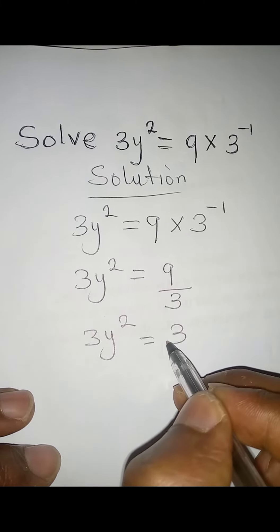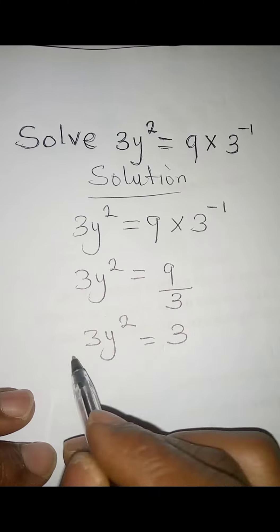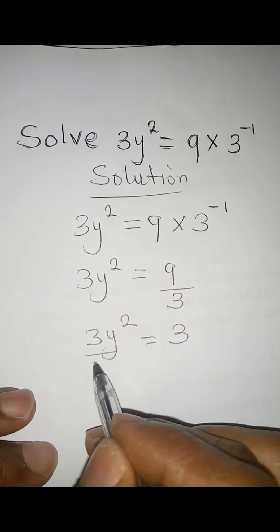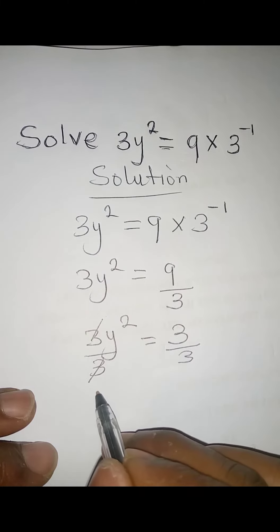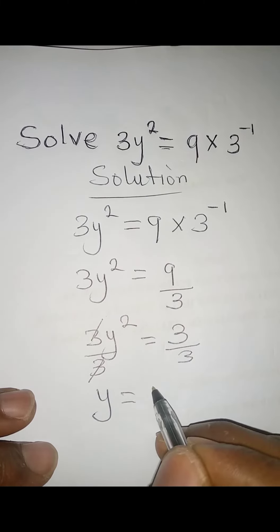Now we can divide both sides by 3. The 3s cancel, so y² equals 3 over 3, which gives us 1. Sorry, it's y².